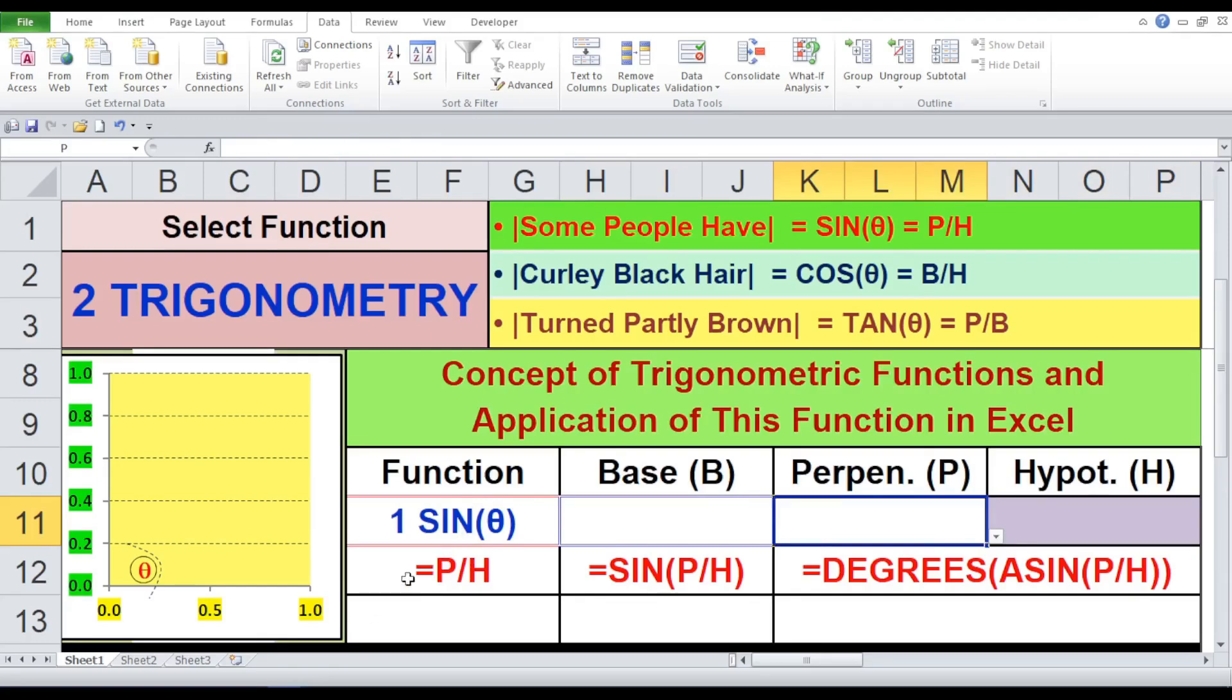Function: This column lists the trigonometric function sine, cos, and tan. Base B: the length of the base of the right-angled triangle. Perpendicular P: the length of the perpendicular side. Hypotenuse: By inputting values for the base and perpendicular, we can calculate the hypotenuse using the Pythagorean theorem. To find the base angle theta, we'll use excel's inverse trigonometric functions Asine, Acos, and Atan.